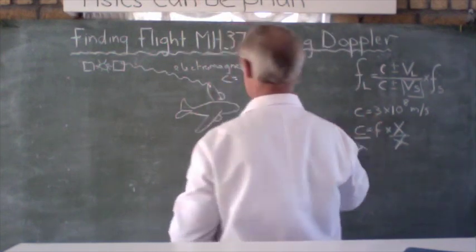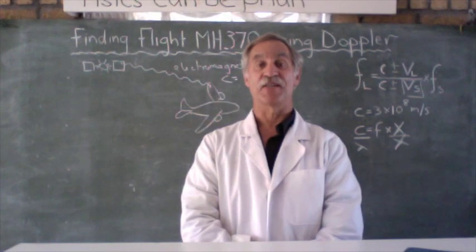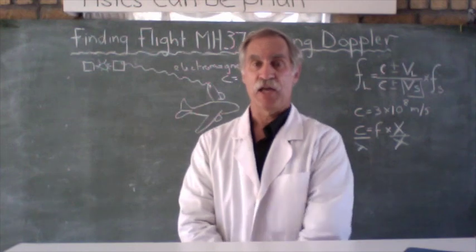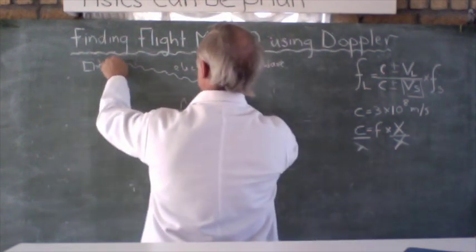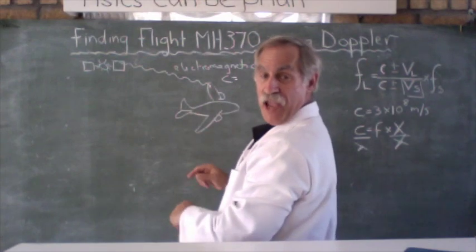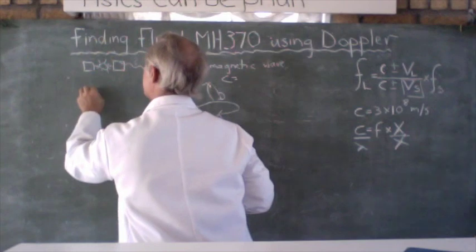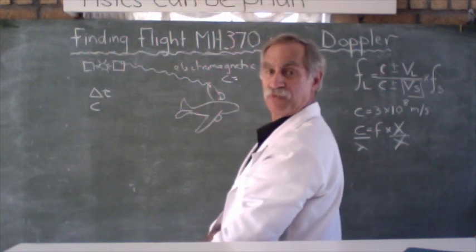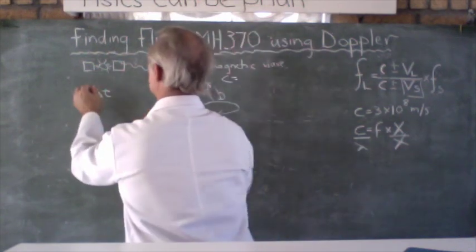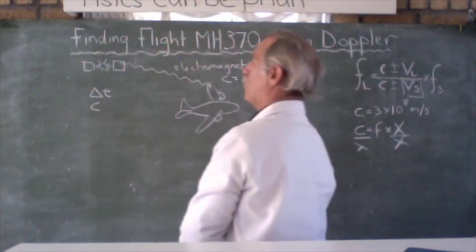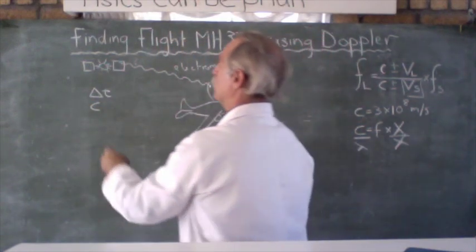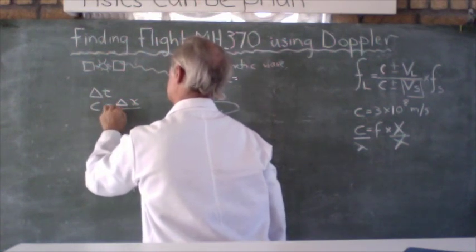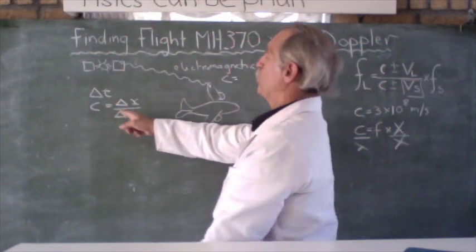These waves all travel at the speed of light, which is abbreviated C. And C has a certain velocity of 3 times 10 to the 8 meters per second. So that's the SI units. So they knew the speed at which the signal was sent to the satellite. And these people were able to time how long this signal traveling at the speed of light took. So they knew delta T.